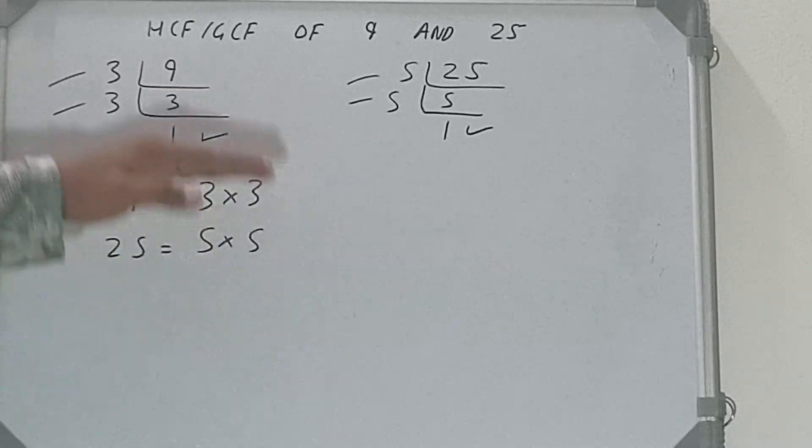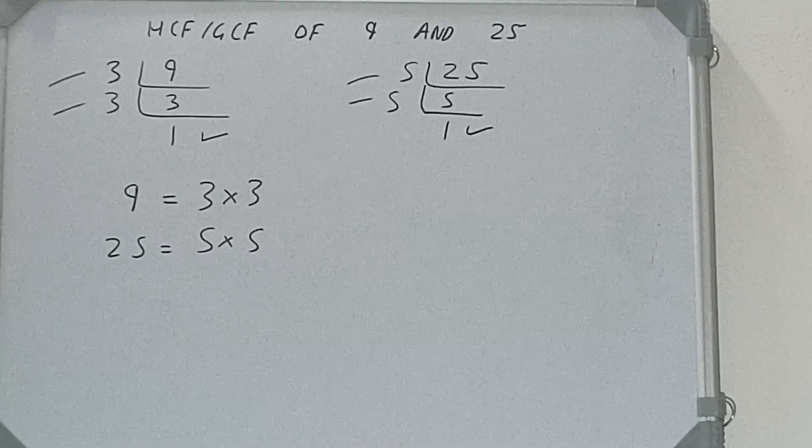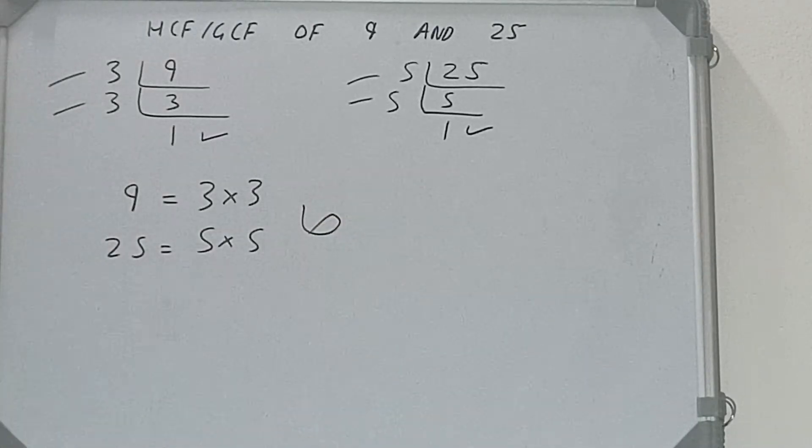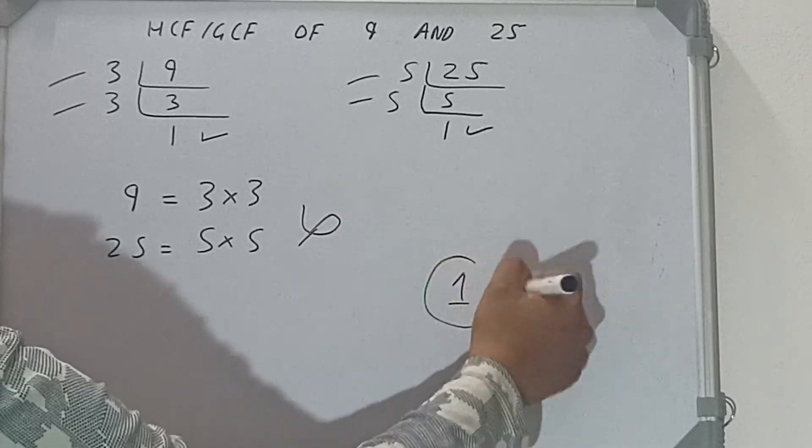Next thing we need to do is circle out the common prime factor among the two. Do we have anything common between the prime factors of the two numbers? No. So when we get a case like this, when there is nothing in common among the prime factors of two numbers, then the answer is 1.